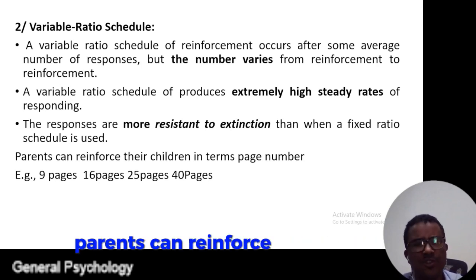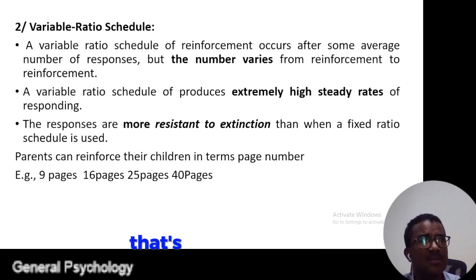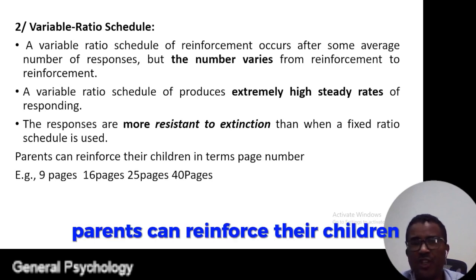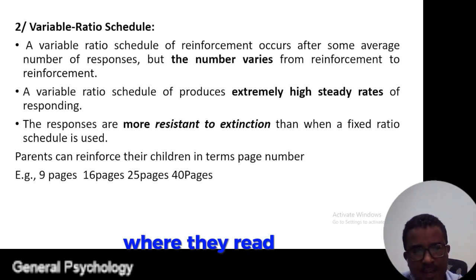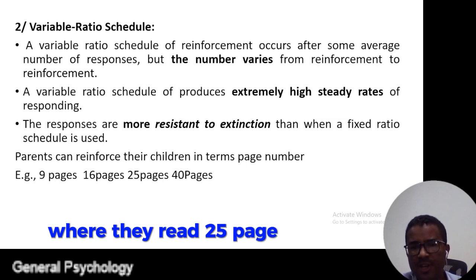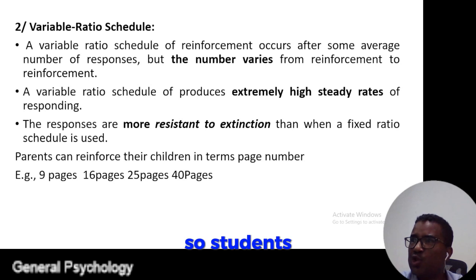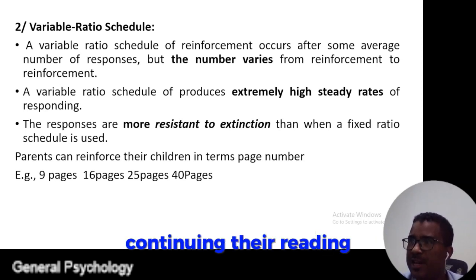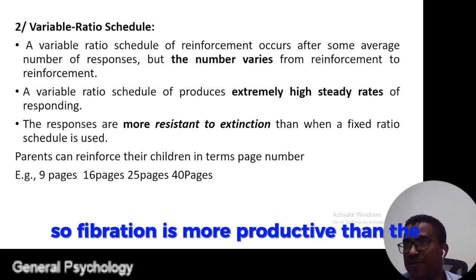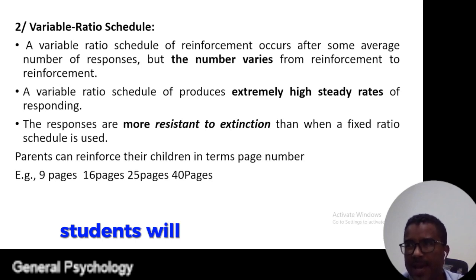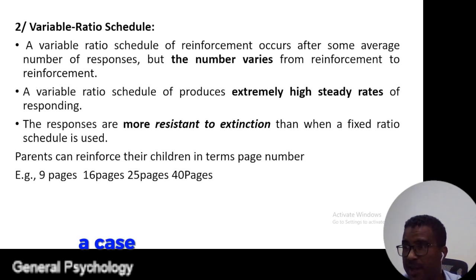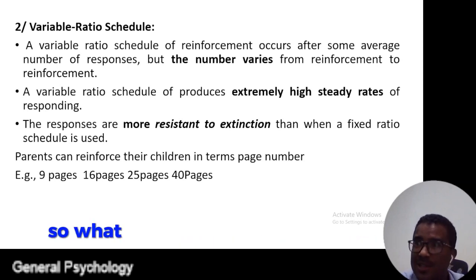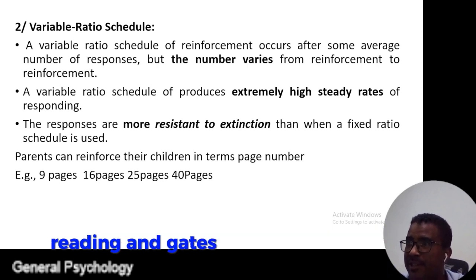For example, parents can reinforce their children in terms of different page numbers, but the page numbers are not expected in advance. Parents can reinforce their children when they read 10 pages, 16 pages, 25 pages, or 40 pages. Students may not know when they will be rewarded, so they simply continue reading. In fixed ratio, students expect the reward at every fixed point, but in variable ratio they don't know when, so they just keep reading and eventually receive the reward.